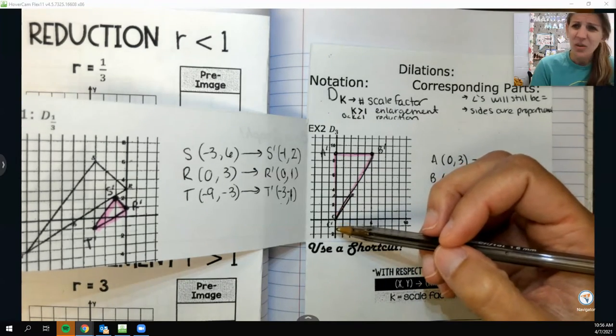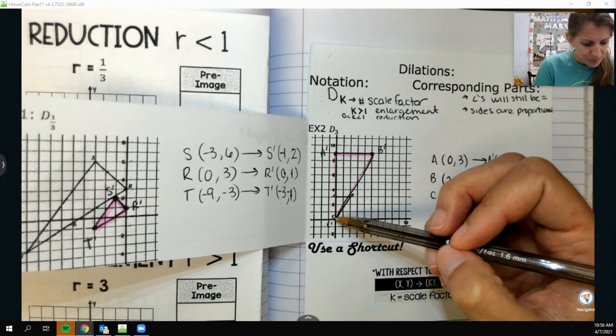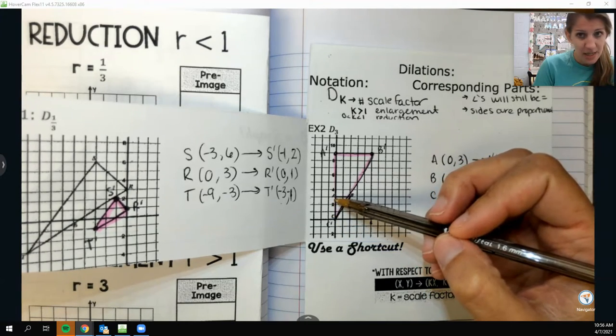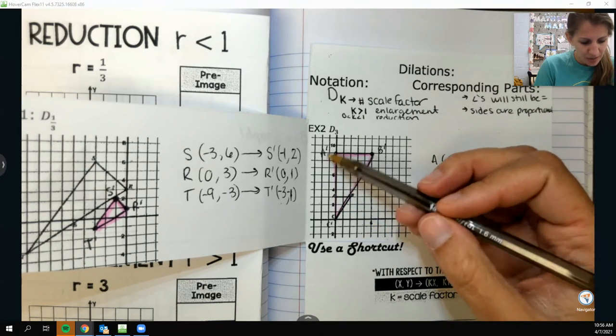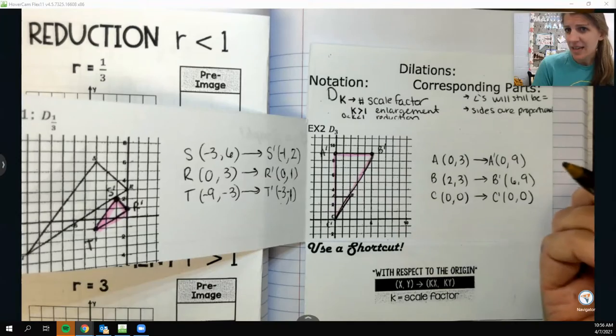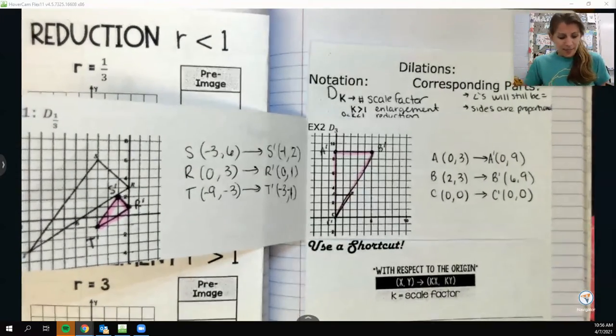Kind of like your line of reflection. If you're on it, you're going to stay on it. So C prime stays put. A is at 0 comma 9. Or A prime rather. And then B prime is at 6 comma 9. So it does maintain that general shape. Like it was a right triangle to start with. And it is still a right triangle. It's just bigger.